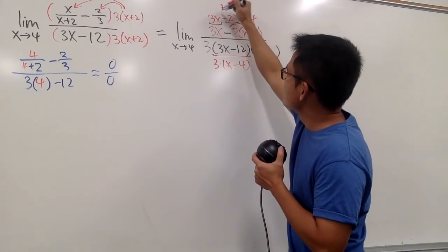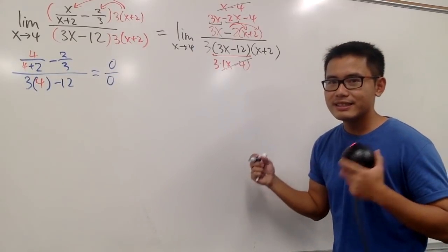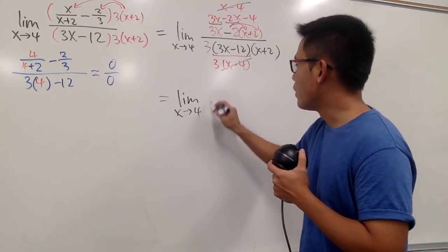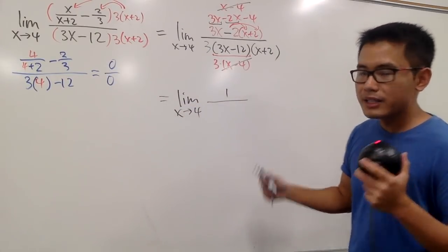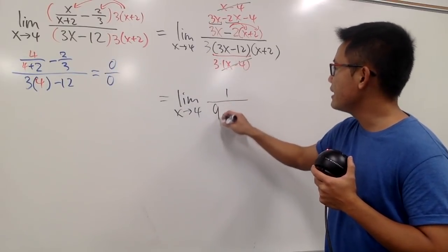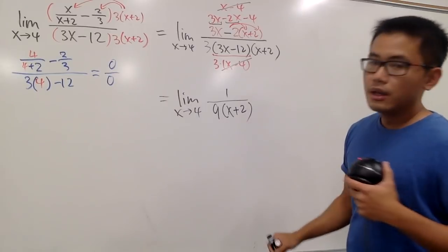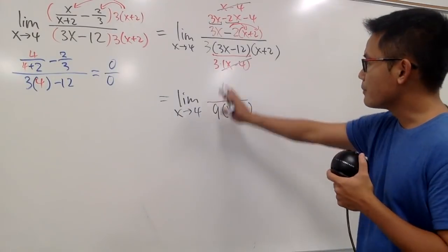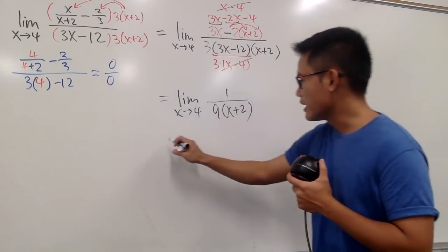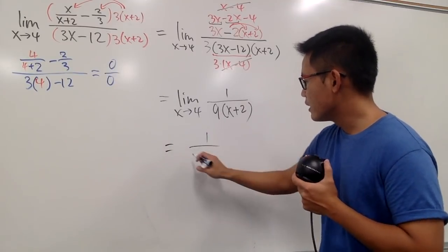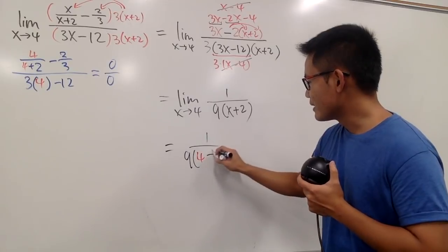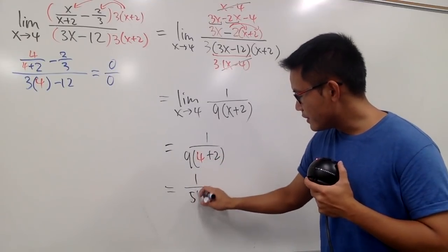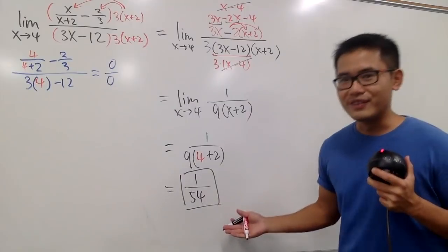After canceling (x minus 4), we have the limit as x goes to 4 of 1 over 9(x + 2). Plug in 4: 4 plus 2 is 6, times 9 is 54. Therefore the answer is 1 over 54.